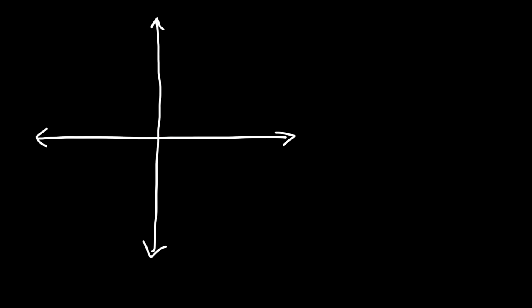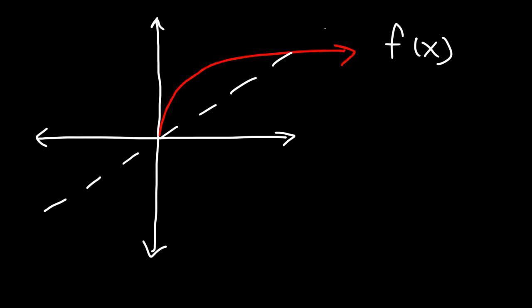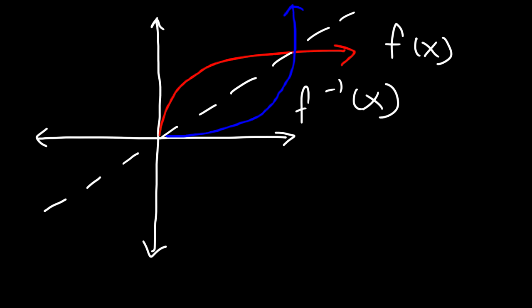In this lesson we're going to focus on graphing the inverse function. So let's say we have the function f of x, and the inverse function is g of x. To graph the inverse function and draw a rough sketch, you need to draw the line y equals x. The inverse function is a reflection of f of x across that line — so that's going to be g of x, symmetric about the line y equals x.